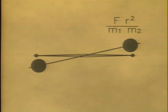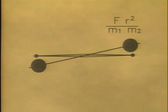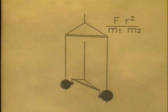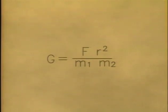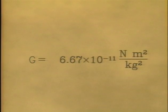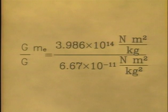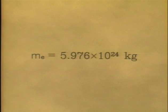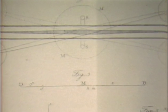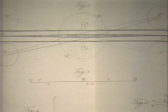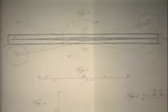Switching the masses around makes the bar twist in the opposite direction, to correct for asymmetries in the experiment. With this delicate experiment and a lot of care, Cavendish measured the gravitational constant, and indirectly weighed the Earth. Weighing the Earth was an astounding accomplishment. But comparatively speaking, it's not truly shocking.